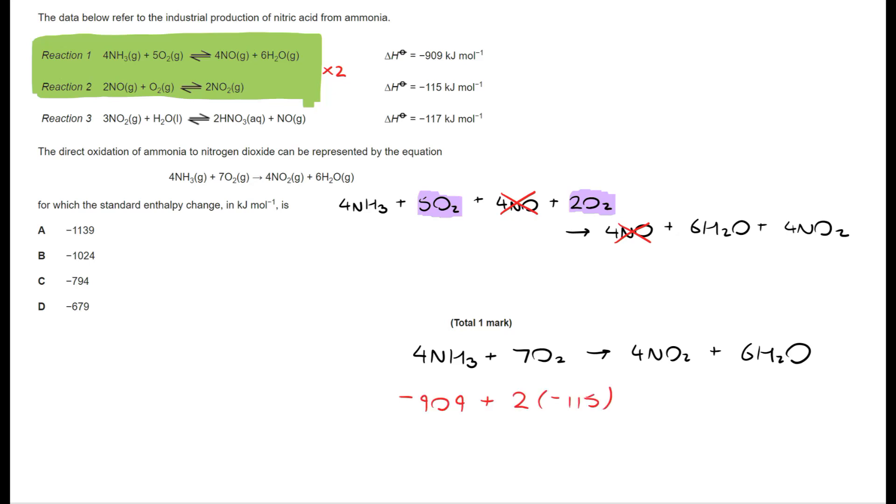Now to do that I need negative 909 because that's the first equation. The second equation I'm doubling so it's 2 times minus 115 which takes me to a total value of negative 1139.